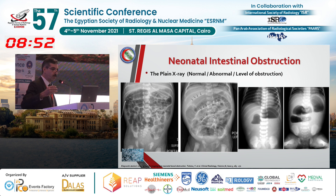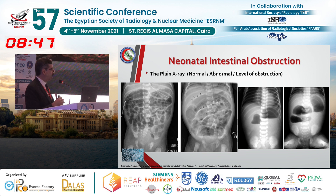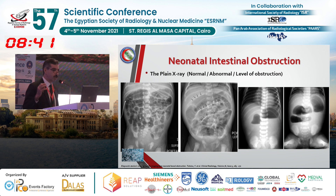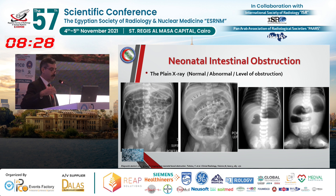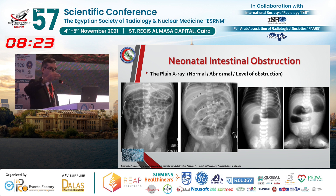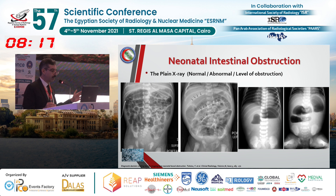Then we have the tube configuration: dilated, air-filled bowel loops resembling large tubes. If I see the cube appearance, that's normal. If I see the tube configuration with dilated bowel loops, that is abnormal and denotes bowel obstruction. Secondly, what is the level of obstruction? The level is always related to the number of air-fluid levels — do I have one, two, three, or more? This is our first question on plain x-ray: is it abnormal, and what is the level of obstruction?